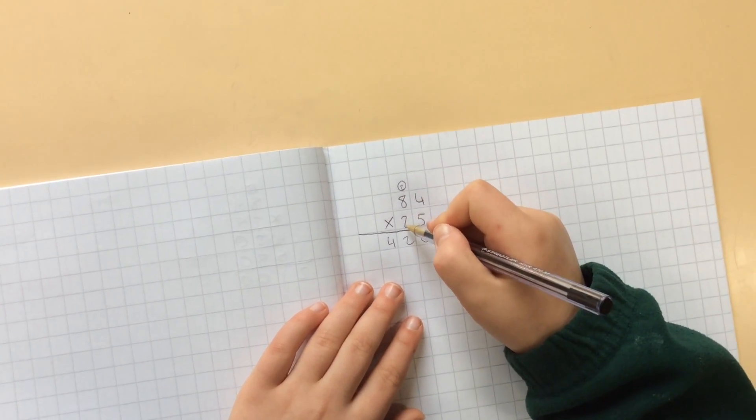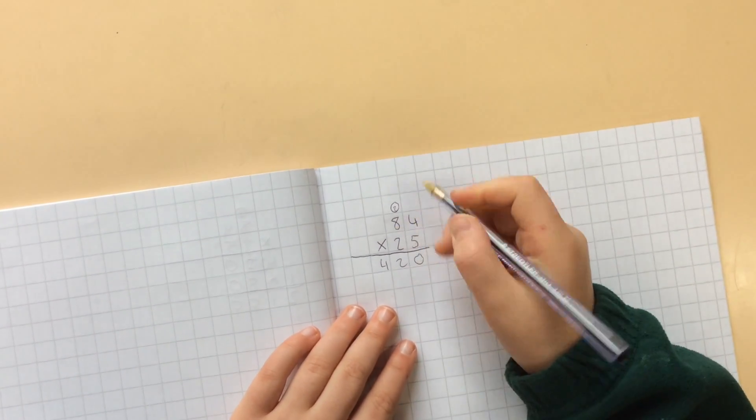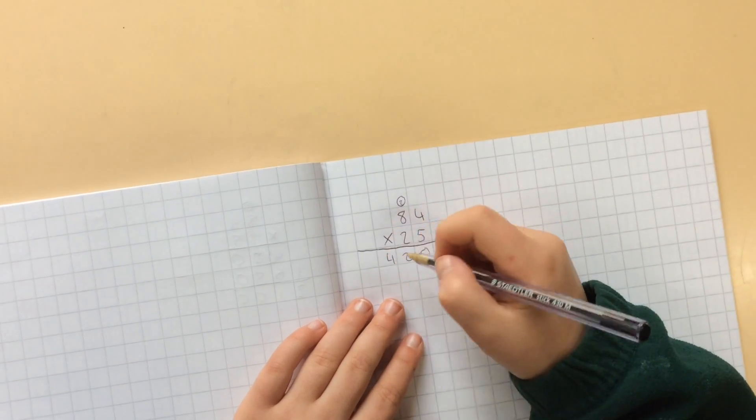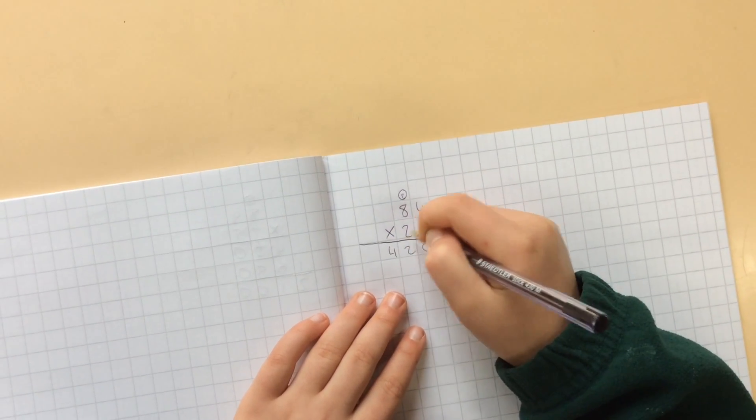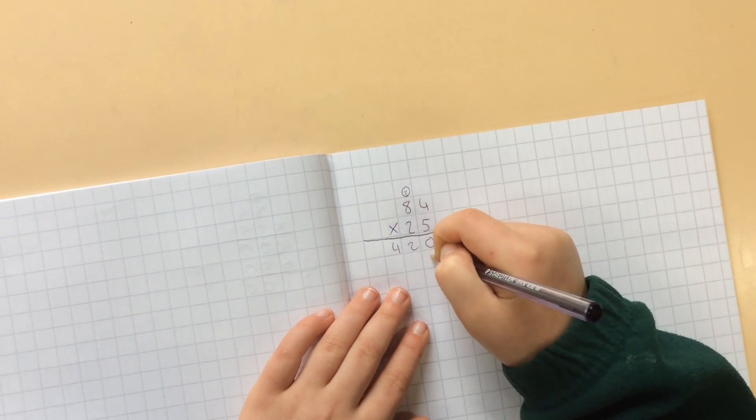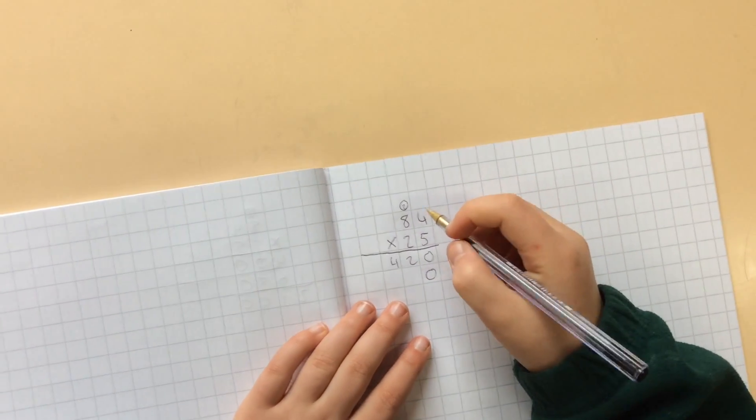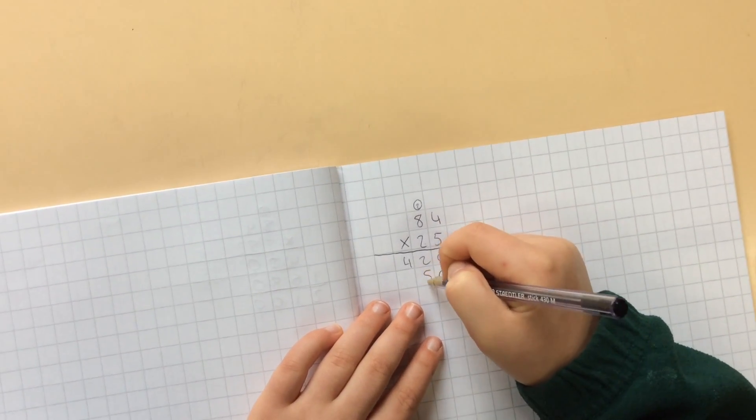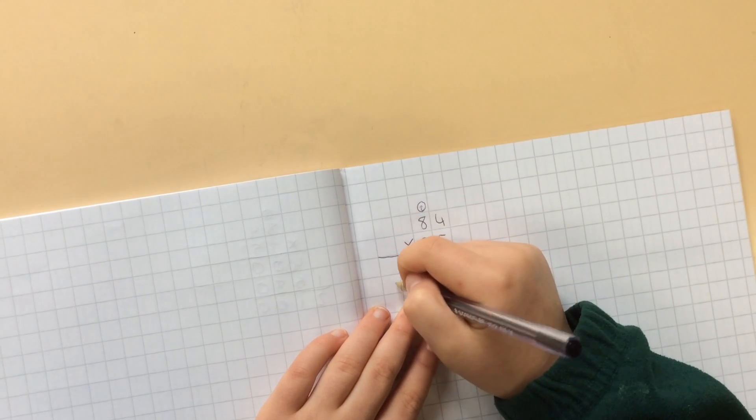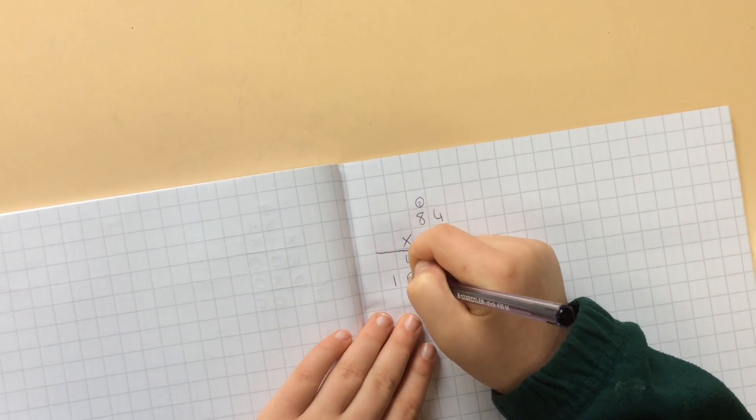Now we're moving on to 20 times 84. And we're going to shift everything down a place value because it's 20, not 2. So I'm going to put my 0 as a placeholder in there. Now 2 times 4 is 8, and 2 times 8 is 16. So write my 16 down here.